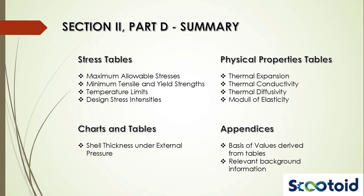Here's what we've learned about Section 2, Part D. Stress tables are used to determine maximum allowable stresses, minimum tensile and yield strengths, and temperature limits for ferrous and non-ferrous materials. Similarly, tables exist for determining design stress intensities. Physical properties tables include values for thermal expansion, thermal conductivity, thermal diffusivity and moduli of elasticity. Charts and tables for shell thickness are used in the calculation of shell thickness of components under external pressure. Mandatory and non-mandatory appendices are useful for understanding the basis of values derived from the tables and to get relevant background information.